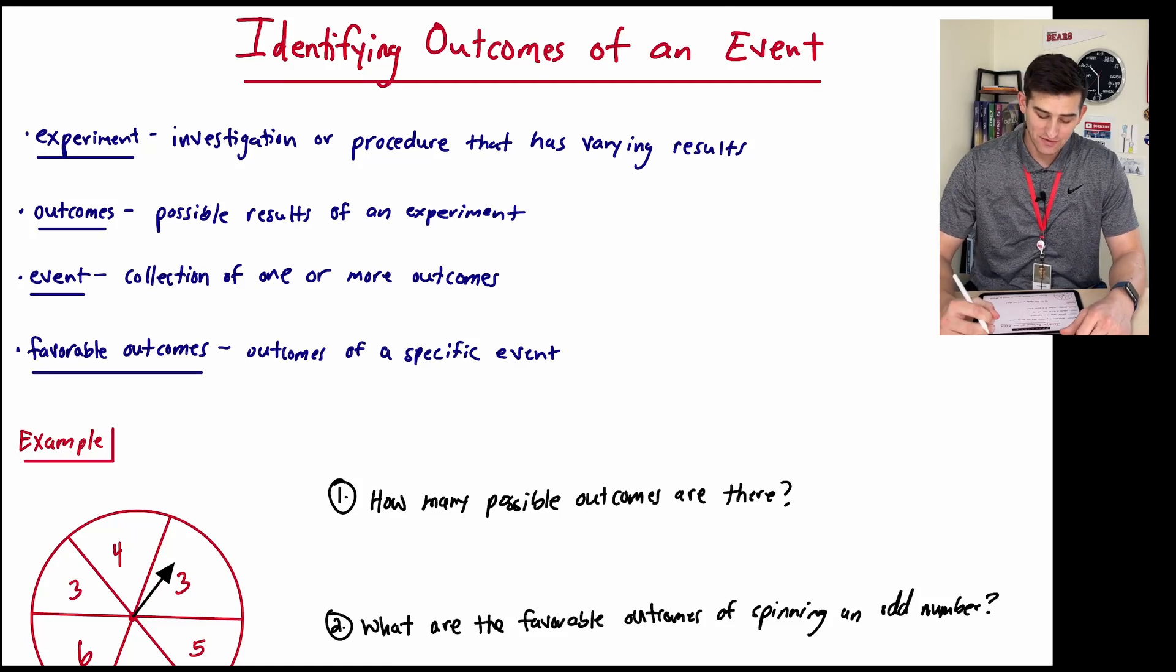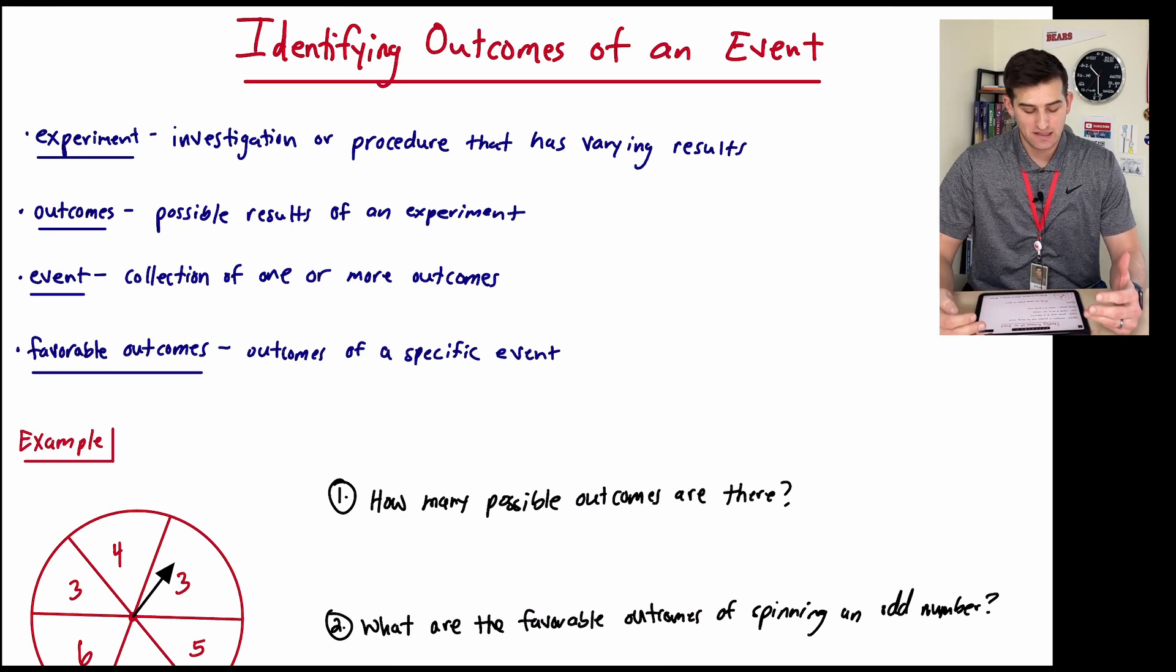Hello everyone, in this video we're going to talk about how we can identify outcomes of an event. So we're talking about probability here, and let's look at four definitions and then we'll look at an example.